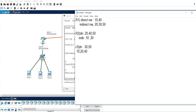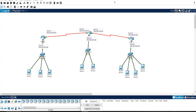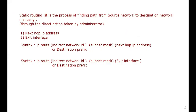In static routing the syntax is: ip route, then the indirect network ID. I'm doing the practical of next-hop first. You can do static routing two ways: either use next-hop or exit interface. If R1 has three indirect networks — 20, 30, and 50 — then on Router 1 you have to put three commands, one for each: 20, 30, and 50.